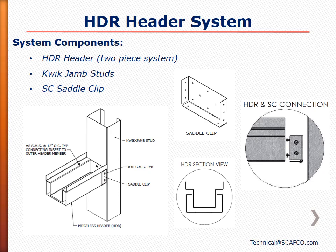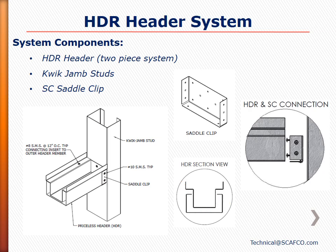As you can see in the photos, the HD header assembly creates no build-up in the width of the wall where drywall board will be applied. This feature is especially important around very tight door frames, as drywall needs to be wedged in between the pre-manufactured doorframe and the header and jam members. We will now move on and discuss the HDR header system, which includes the two-piece HDR header, the quick jam studs, and the saddle clip for the header-to-jam connection.